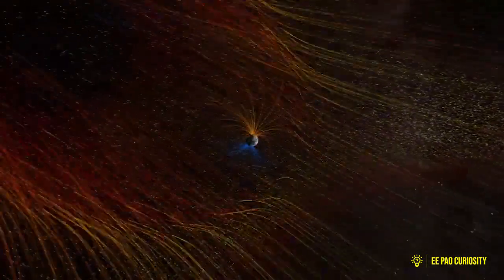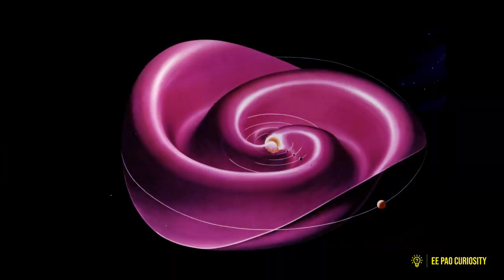Because of the Sun's rotation, the interplanetary magnetic field, like the solar wind, travels outward in a spiral pattern.